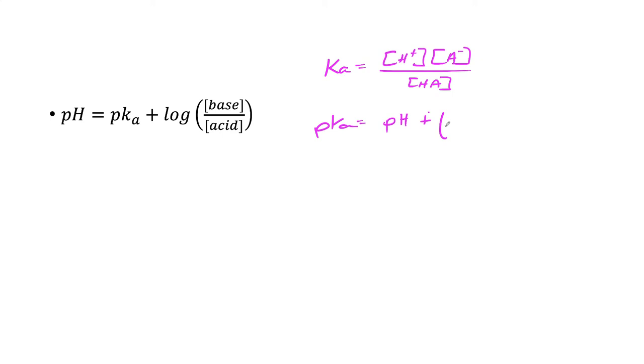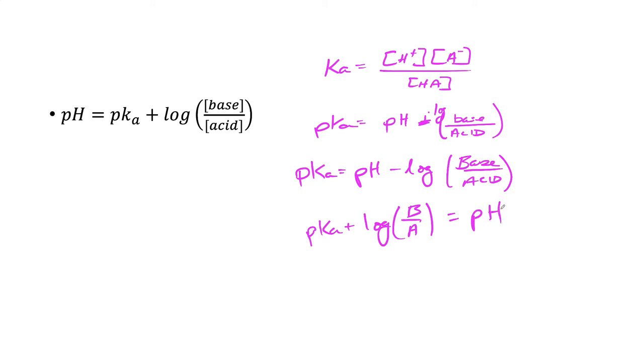So the negative log pKa equals the negative log, which is the pH, minus log of base over acid. Let me rewrite that: pKa equals pH minus log of base over acid. Moving the log over to the other side, we have pKa plus log of base over acid equals pH. And this is how this is derived.